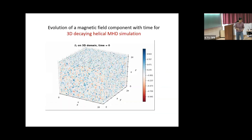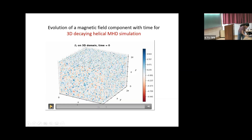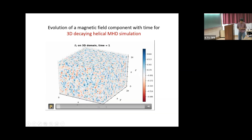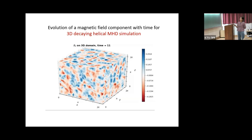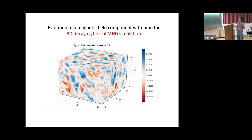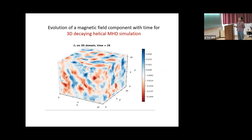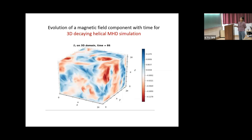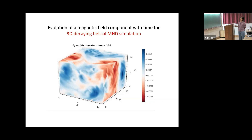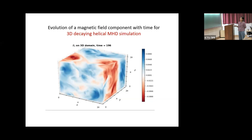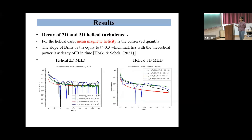Here you can see the evolution of the magnetic field component with time for a 3D decaying helical MHD simulation. The small magnetic structures grow in scale with time, which we say is occurring via magnetic reconnection.